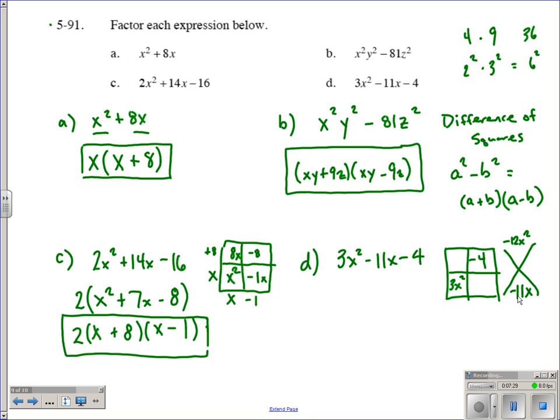So factors of negative 12x squared that have a sum of negative 11x would have to be negative 12x and positive x. So let's plug those in here, negative 12x and a positive x. Our greatest common factor between 3 and negative 12 is 3. Between x squared and x is going to be x. So 3x times 1 is 3x squared. That's going to be an x. x times 1 is going to be x. That would be a 1. And 3x times what gives us negative 12x? That would be a negative 4. We've got here 3x plus 1 and x minus 4. That is our factored answer for part D.